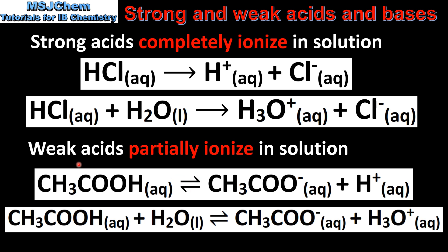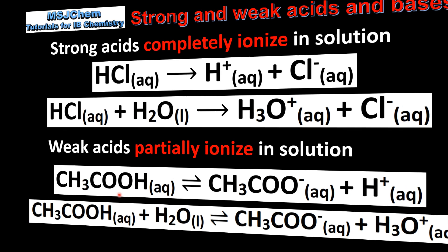Unlike strong acids, weak acids only partially ionize or dissociate in solution. In the case of ethanoic acid, for a hundred ethanoic acid molecules only one will dissociate to form the ethanoate ion and a hydrogen ion. Therefore the equilibrium lies to the left.